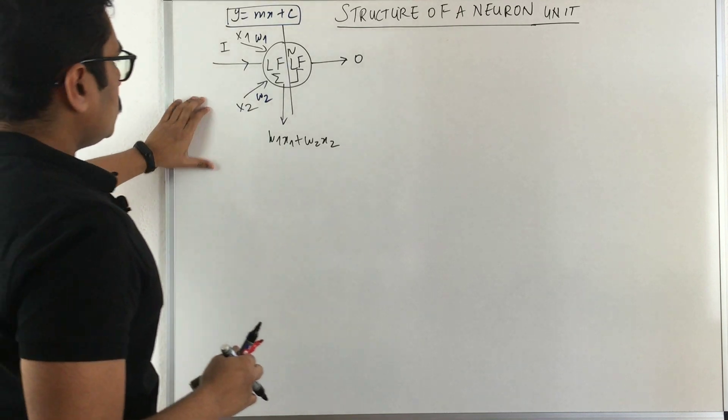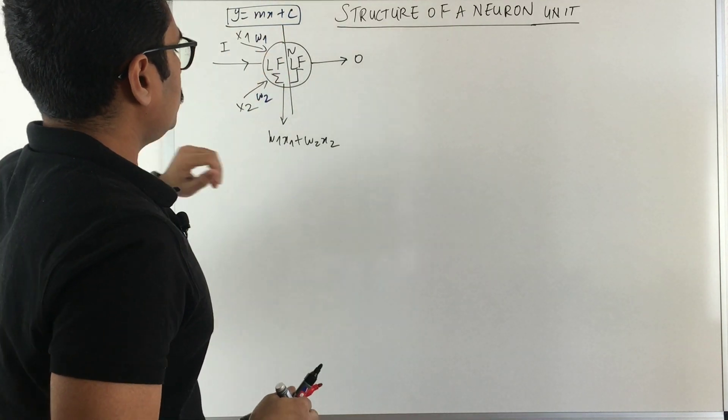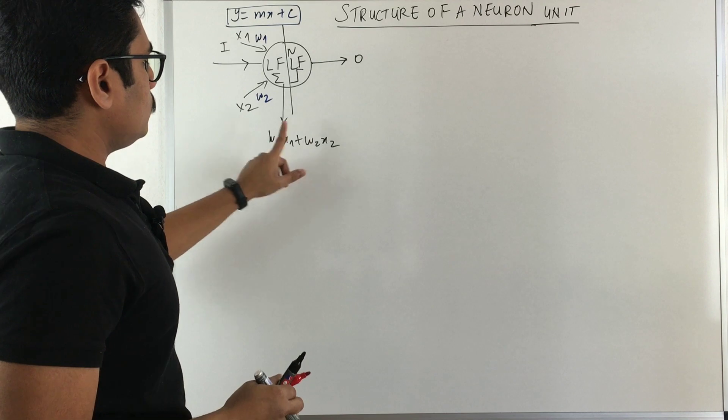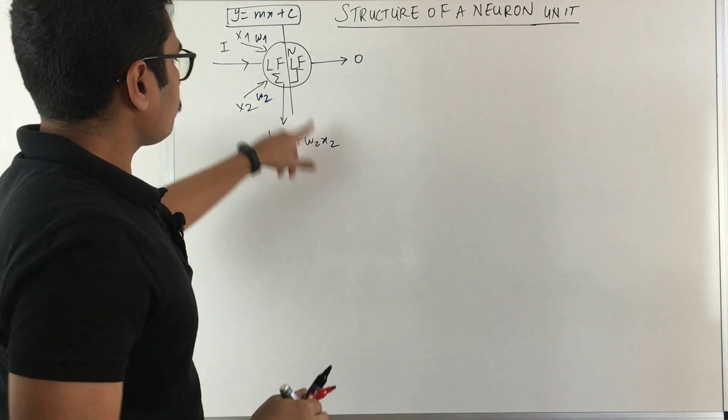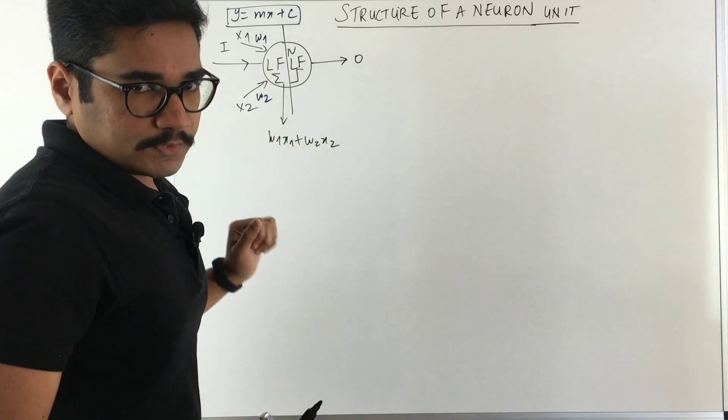What you essentially have is in the first part, you have this linear function. It will do the product of sum of all the weights multiplied by the input vector and then it will pass on to the nonlinear function.